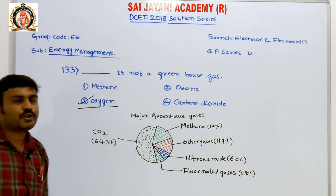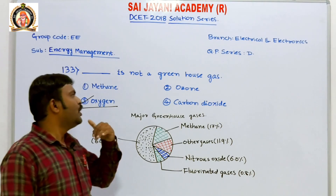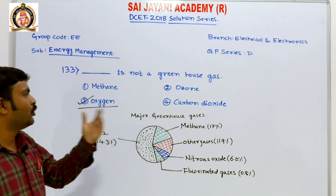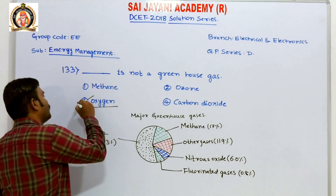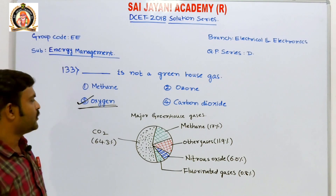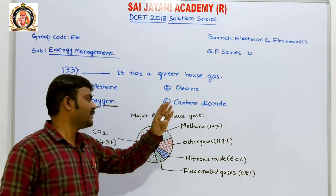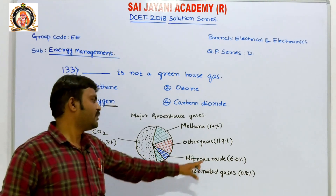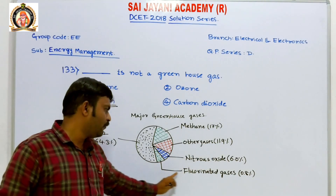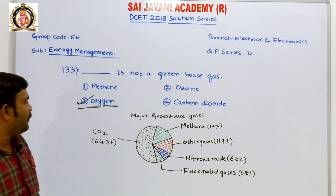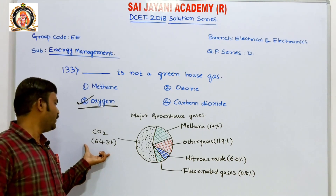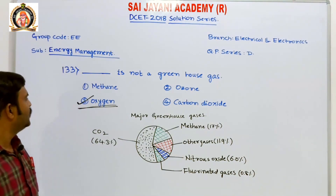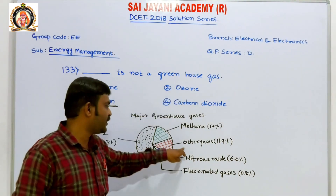Now let us solve questions on energy management. Question number 133 says: which of the following is NOT a greenhouse gas? First option, methane. Second option, ozone. Third option, oxygen. Fourth option, carbon dioxide. The answer is oxygen, the third option. Looking at the major greenhouse gases by chart: carbon dioxide has 64.3%, methane has 70% among others, nitrous oxide has 6%, fluorine gas 0.8%, and other gases 11.9% — oxygen is not present in the greenhouse gas pie chart. Ozone falls under the other gases category.